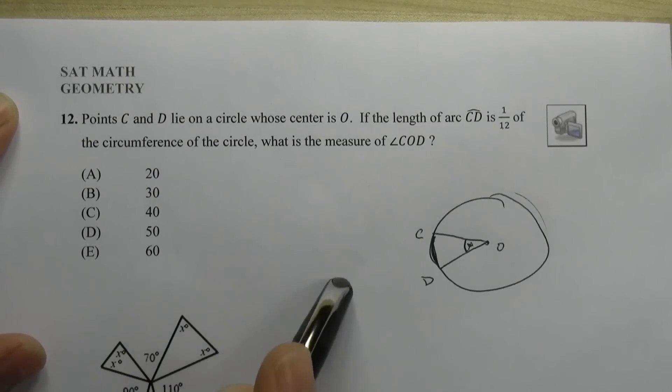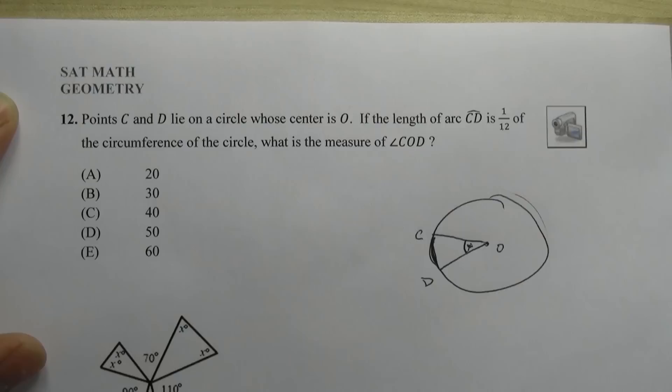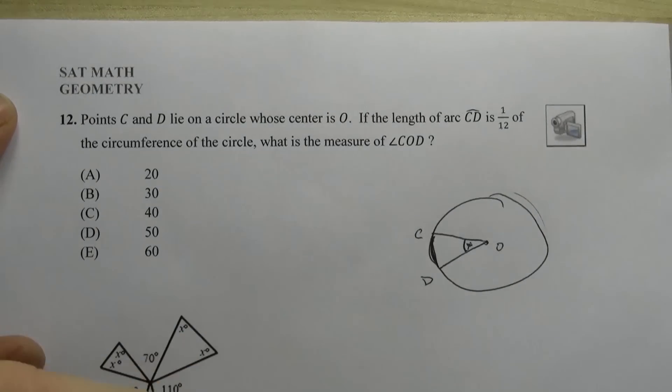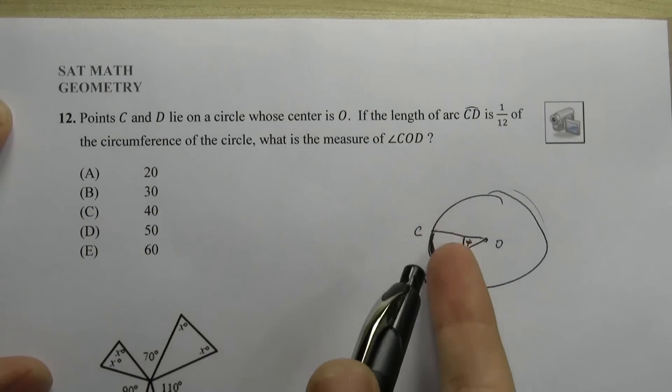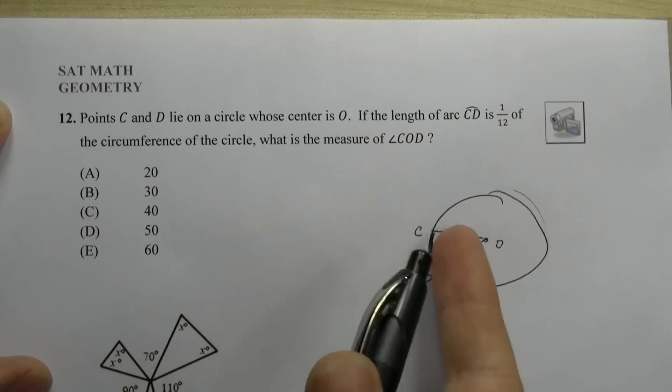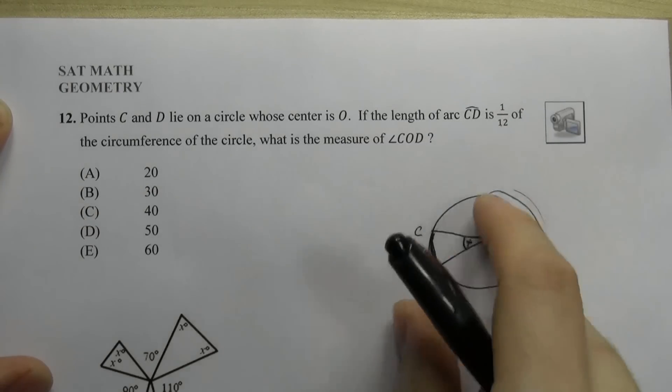So the question is, how do we relate arc length to central angle measure? And it's not a one-to-one thing exactly. Whatever the actual measurement is, it's not exactly equal, but it is proportional, right?